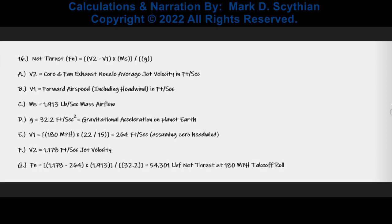Next, we compute the net thrust at 180 mph V1 rotate liftoff speed, right before the aircraft goes airborne. That is simply V1 in feet per second — converting 180 mph to feet per second — subtracted from the jet velocity at maximum throttle, times the mass airflow entering both the fan and the core, divided by the gravitational acceleration of 32.2 feet per second squared, yielding 54,301 pounds of net thrust at 180 mph takeoff roll.